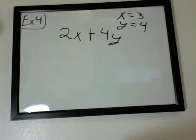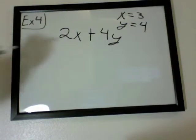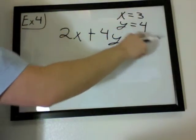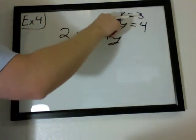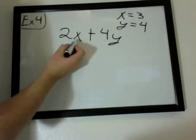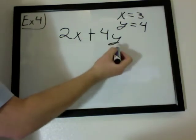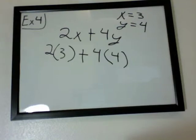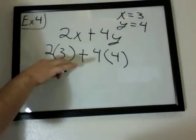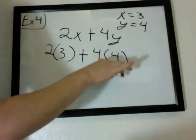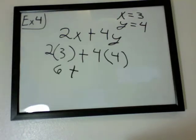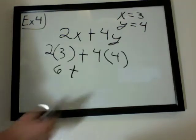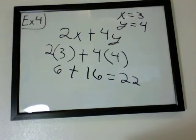Let's look at one that requires substitution, where we're given values for x and y and plugging them into the equation and then solving. So we have 2x plus 4y. x equals 3 and y equals 4. Just plug these variables into the equation. Replace the x with the 3 and replace the y with the 4. So your new equation should look like this. 2 times 3 plus 4 times 4. So 2 times 3 is 6. 4 times 4 is 16. So you should get 22 for your answer.